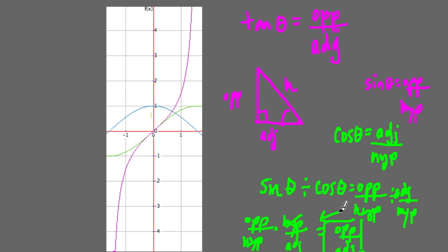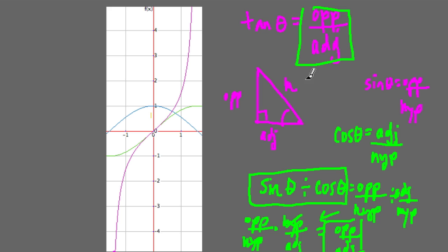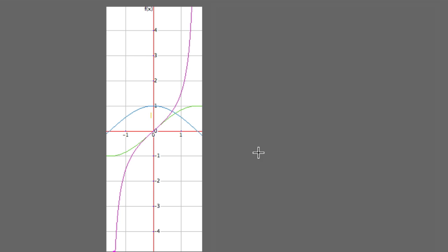So what does that mean? Well, if sine of theta divided by cosine of theta equals opposite over adjacent, and the tangent of theta equals the opposite over adjacent, that means the sine of theta divided by the cosine of theta must also equal the tangent of theta. That's the identity: tangent of theta is a ratio — sine divided by cosine equals the same thing as tangent. So tangent of theta equals the sine of theta over the cosine of theta.